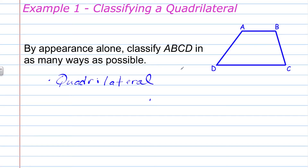When looking at the special types of quadrilaterals, we are concerned with opposite sides, angles, and adjacent sides. In this particular quadrilateral, side AB and side DC appear to be parallel. Therefore, we have one pair of opposite sides parallel. If we look at side AD and side BC, they do not appear to be parallel. By definition, when there is one pair of opposite sides parallel, we can classify that quadrilateral as a trapezoid.